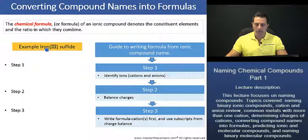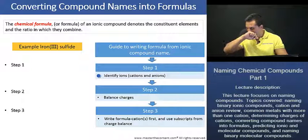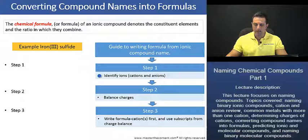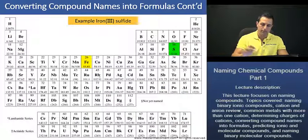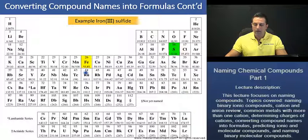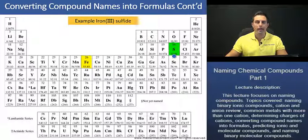We'll start here with iron(III) sulfide. In step one, let's first identify the ions on the next slide. Our iron is going to be our cation. Sulfur is going to be our anion.